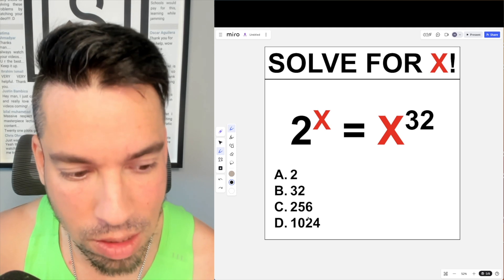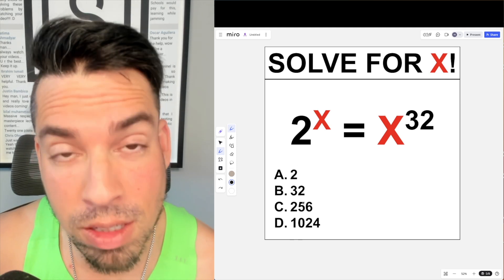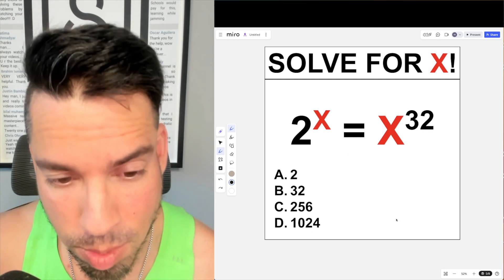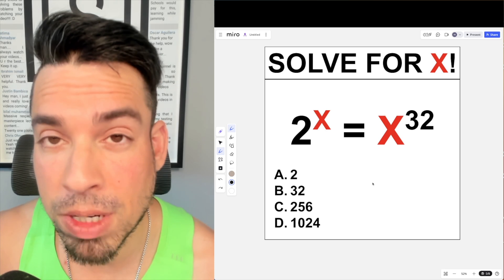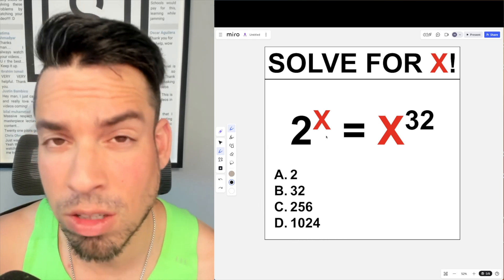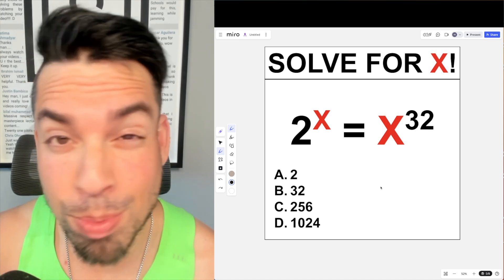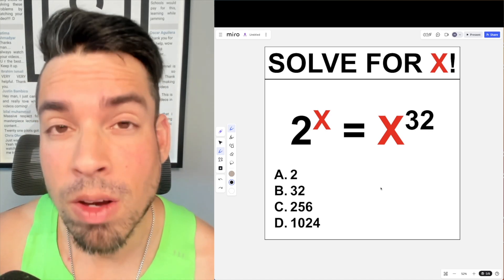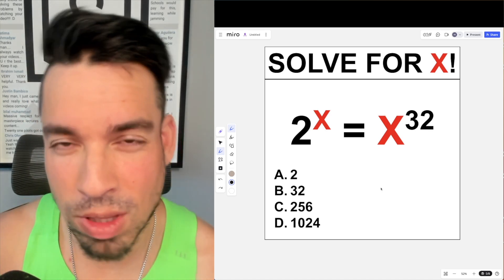We got 2, 32, 256, and 1024. Now these numbers are going to be crazy to plug in, some of the bigger ones, so that might be tricky. But your objective is to figure out which of these four choices is the correct solution for x. Hit that pause button and see if you can figure it out. When you're ready, hit play and I'll give you the explanation.